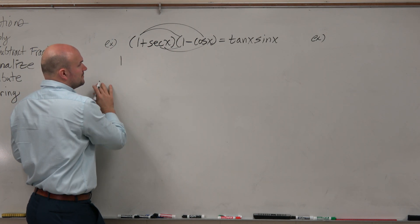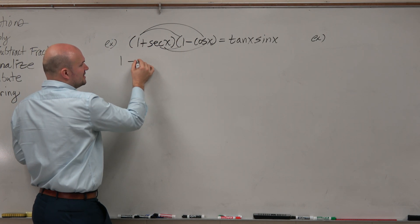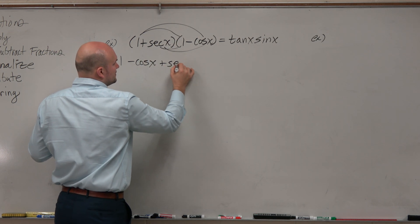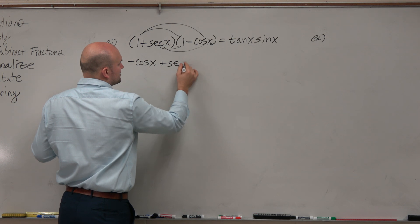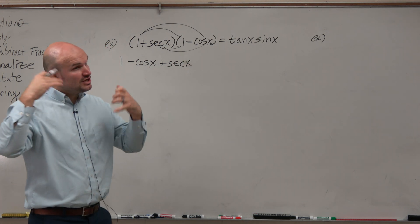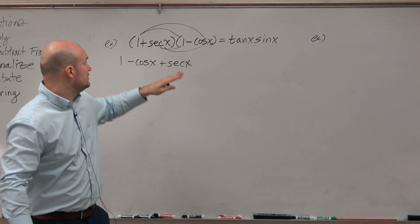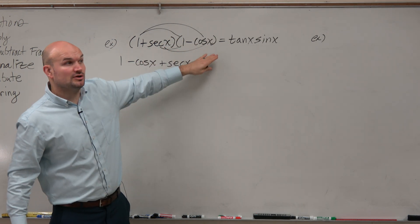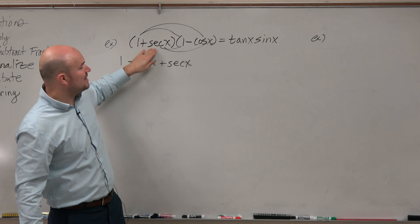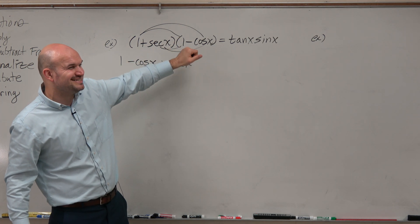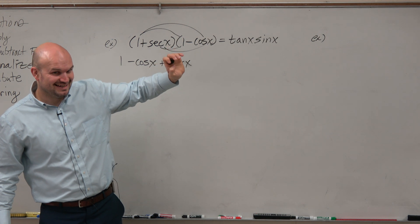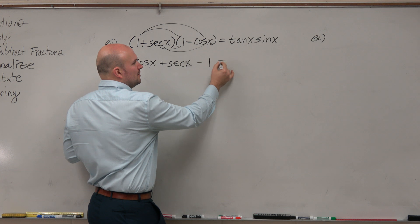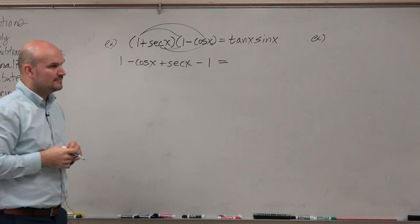So let's work through that. 1 times 1 is 1. 1 times negative cosine is a negative cosine of x. Secant of x times 1 is a positive secant of x. And then now I'm going to start using my identities that I practiced last class period. Secant of x times negative cosine, those are reciprocals of one another. So therefore, positive secant times a negative cosine is negative 1, because reciprocals multiply to give you 1.